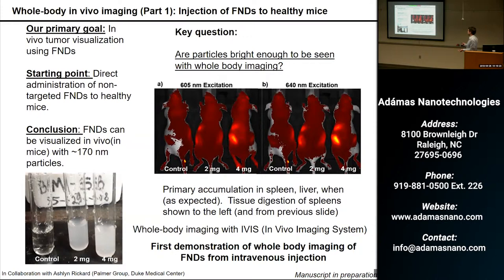These images show two different excitations, 605 and 640 nm. We see accumulation mostly in the spleen and liver, which is expected because those are the filtering organs. You do see this increased signal versus the control mice with no diamonds. We also ended up doing tissue digestion with these spleens, and this is where you can see the increasing administration dose and then increasing concentration of the particles in the digested tissue.